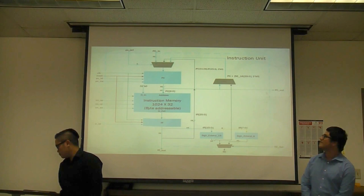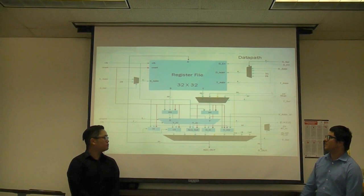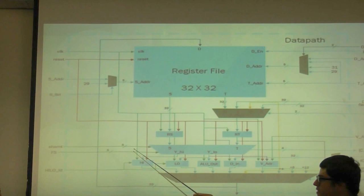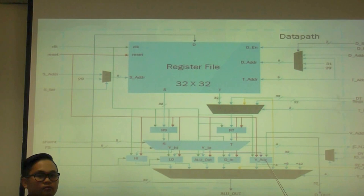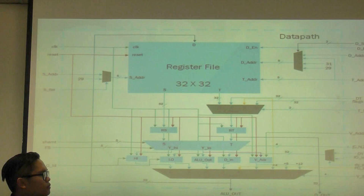This is our integer data path. We have a 32 by 32 register file. We have our ALU, which also takes a shift amount. We also have added a register called the address register, which is used to calculate the address of where the vector is going to be stored or loaded from. We also have a multiplexer here — one input comes from the IO memory and the other from data memory.